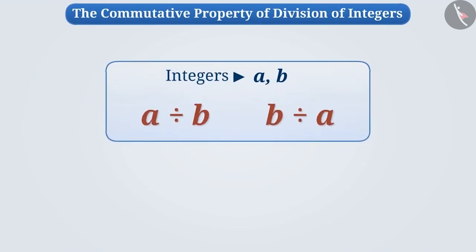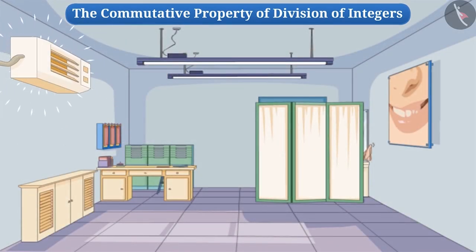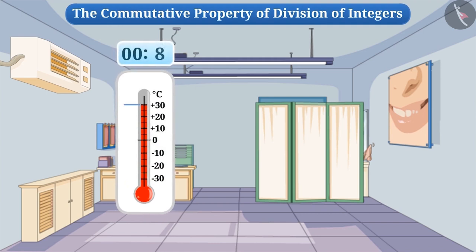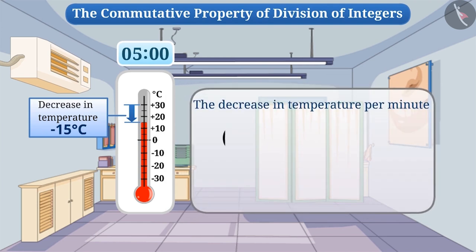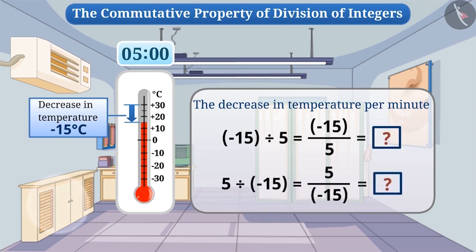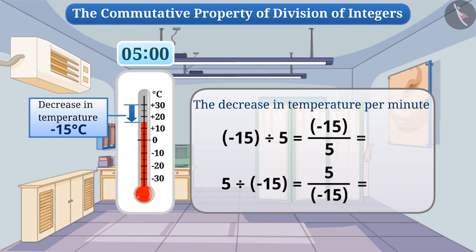Is the division of integers also commutative? One room was being cooled using AC. It was observed that the temperature dropped by fifteen degrees Celsius in five minutes. We will represent this as minus fifteen degrees Celsius. To find how much the temperature decreased per minute, we divide minus fifteen by five. The result of minus fifteen divided by five is minus three, but when the order is changed, five divided by minus fifteen gives minus one-third. The results are not equal.